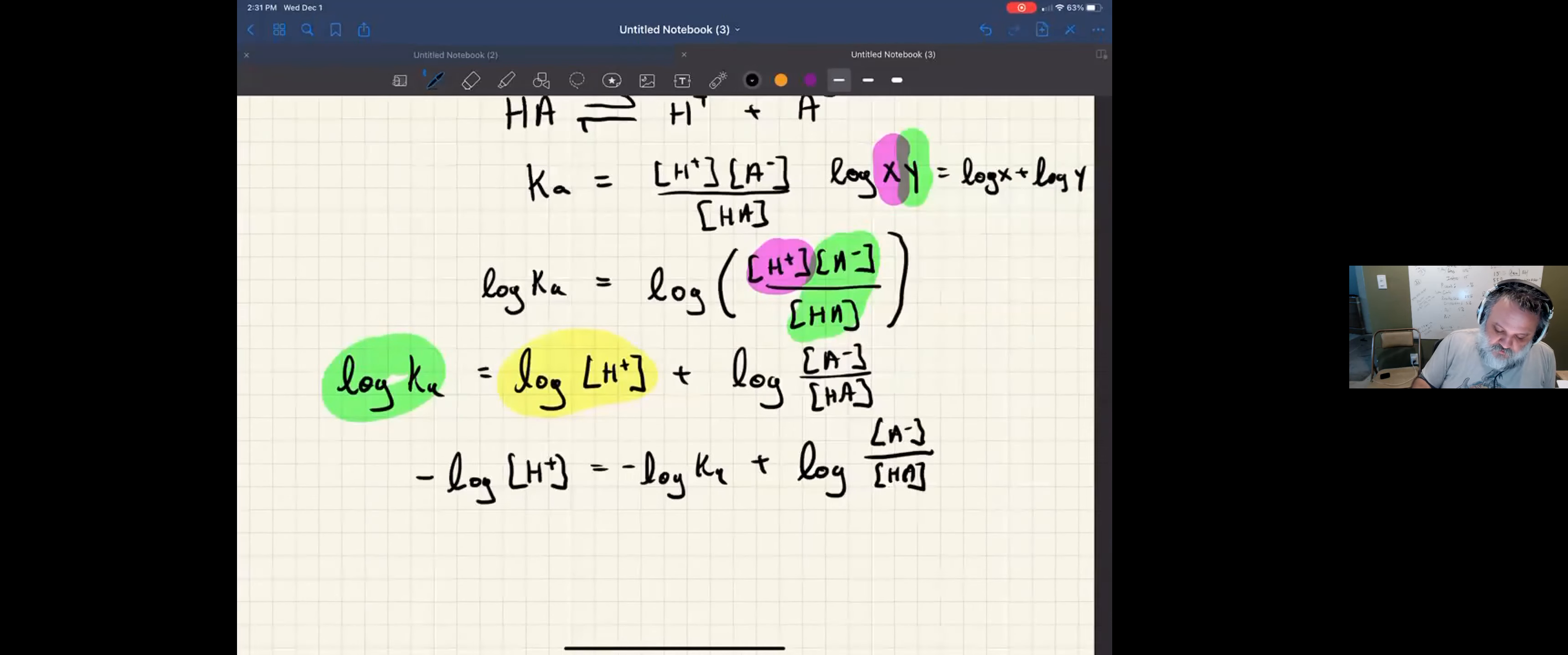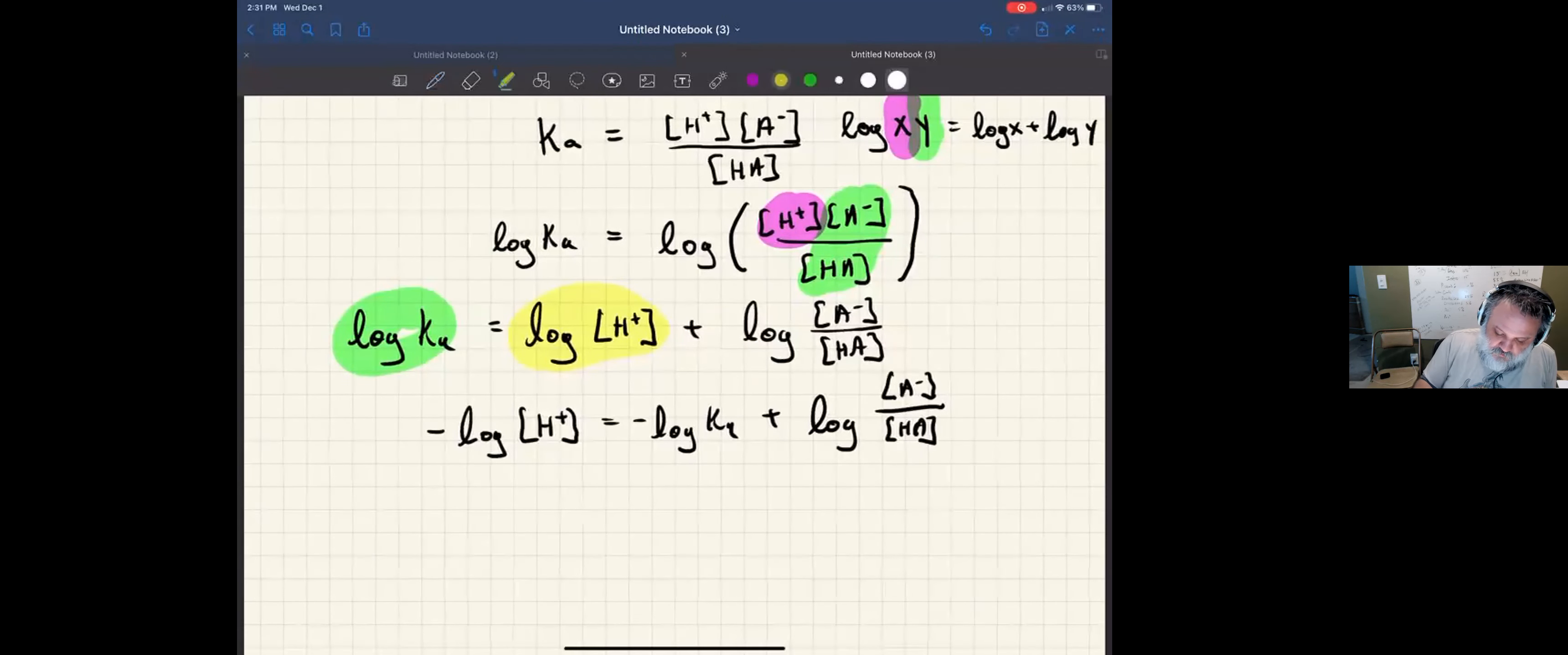And what do we call negative log of H plus? We have a name for that, pH. What do we call negative log of the Ka? We have a name for that, pKa.